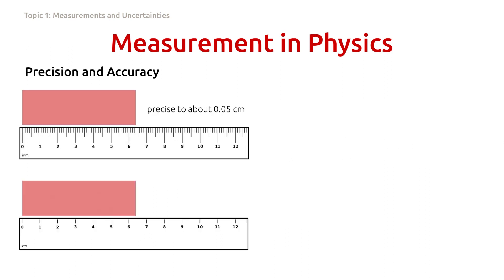Another way of describing precision and accuracy is by looking at this example. The length of this object measured using a regular ruler is said to be precise to about 0.05 centimeters.